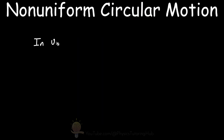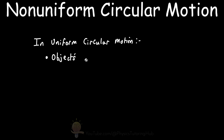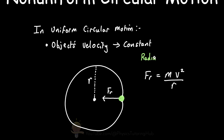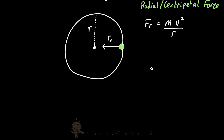The centripetal force — also known as radial force — acting on an object in uniform circular motion is simple to work out. In uniform circular motion, the object's speed is constant, so we only have one force acting on the object. This centripetal force always points towards the center of the circle. As shown in the diagram, the object moves in a circular orbit at constant speed, and the radial or centripetal force vector always points toward the center.